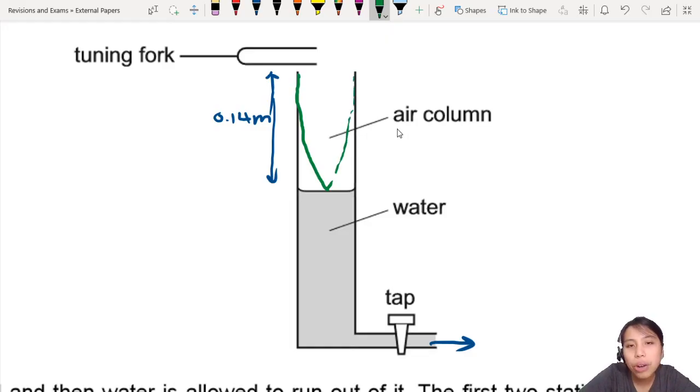I'll try to draw it out. In air columns, one end where the water is, is the node. The air cannot vibrate there because that's a boundary. On the other end, if it's an open air column,